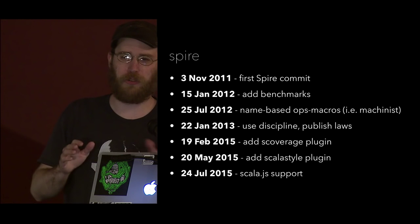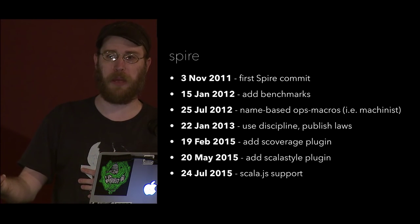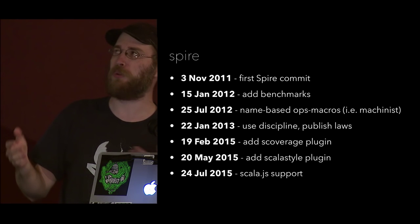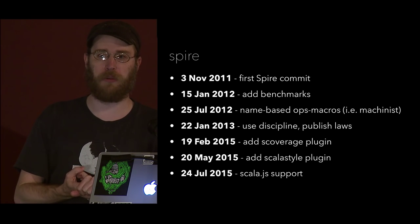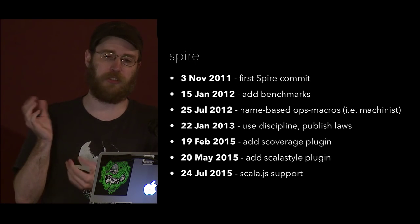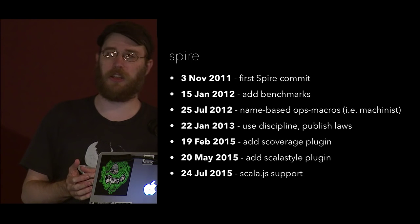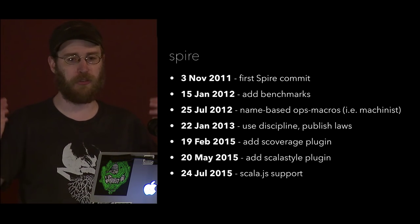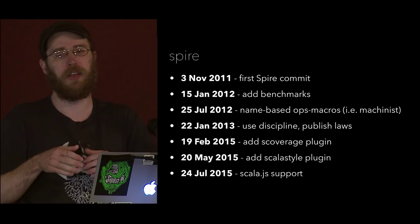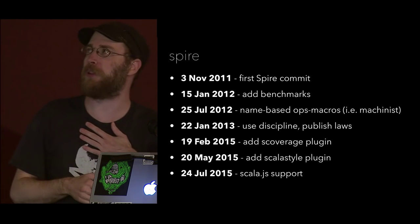These milestones represent things where the project really matured. Adding benchmarks was huge — we were able to measure how we were doing. The ops macros is something we became kind of known for. Publishing laws and using Discipline was a really big deal. More recently in 2015, tracking code test coverage — we fixed a ton of bugs when Rudiger proposed we do test coverage and tried to get 100% coverage on important types. Scala style trying to standardize code formatting. And then Scala.js support — Alistair Johnson swooped in and made it happen by literally porting our whole dependency chain.